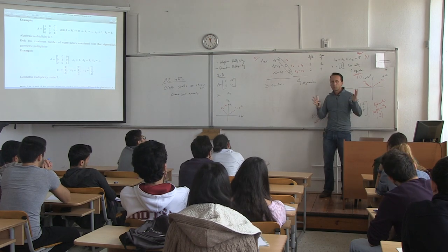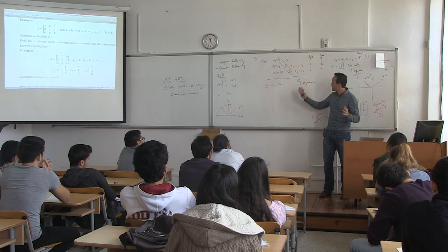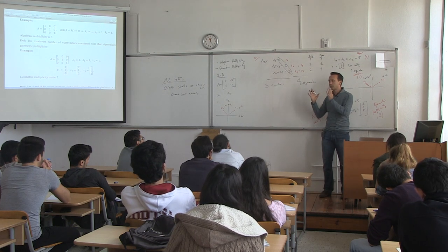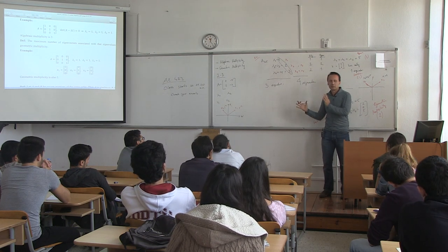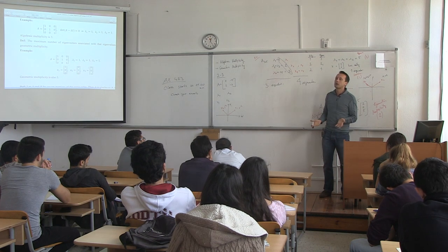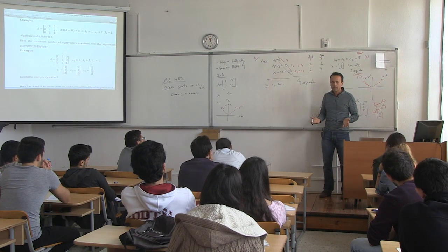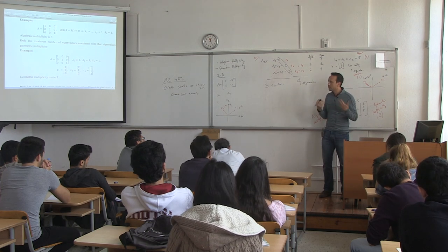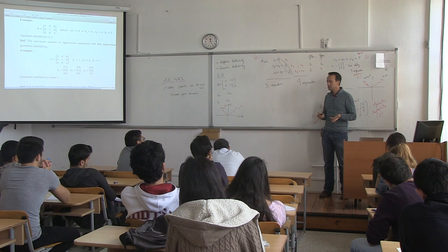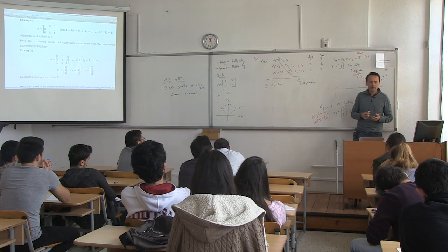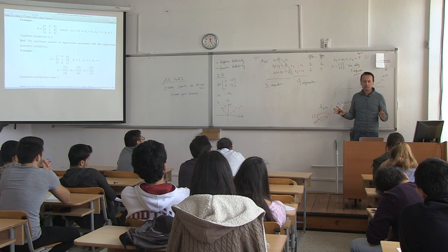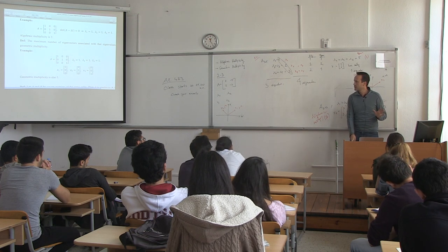In control theory — modern control — this actually means something. If the A matrix has fewer independent eigenvectors than its dimension, it affects what you can or cannot do with the system. This distinction is very fundamental.